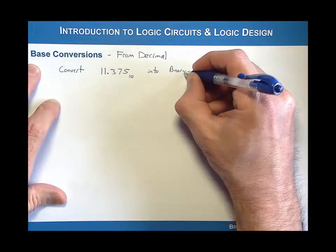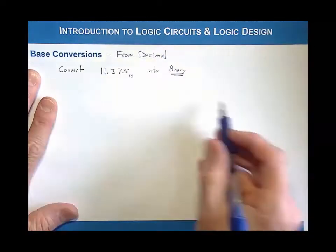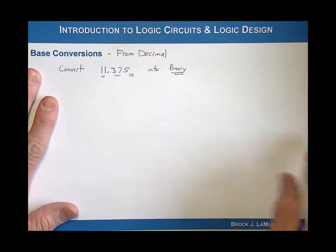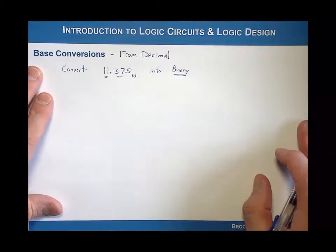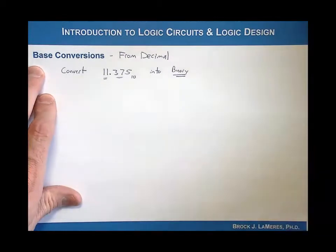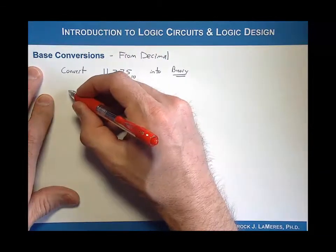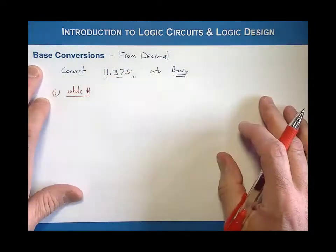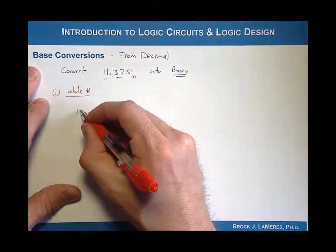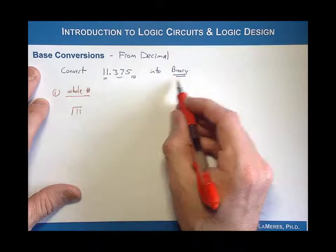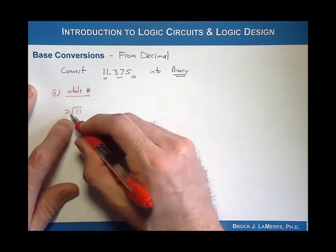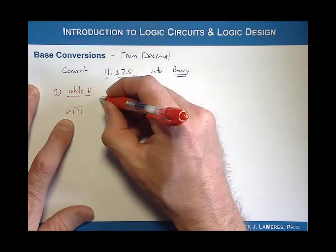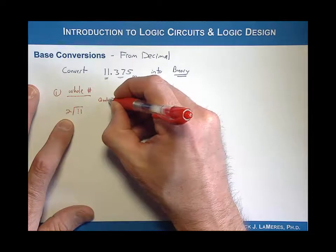We have a decimal number and we're going into binary. The way that we do this is we convert the whole number portion separate from the fractional part, and then we'll combine them together at the end. So step one is the whole number. What we do is you start by taking the number and you divide it by the base that you're going into. In this situation, I take the whole number and divide it by base two because I'm converting into binary. Then I make a table where I record the quotient and also the remainder.